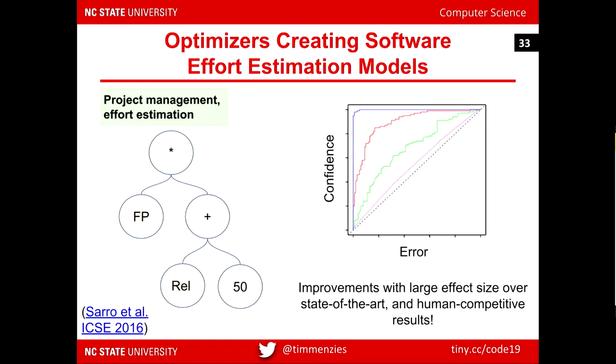Federica Saro at ICSE 2016 talked about multi-objective project management methods, wanting to decrease the error of predictions and the variance of those predictions. She implemented that with a standard optimizer, NSGA2 — the linear regression of optimization. And she found she could do very well in predicting — when she compared against human levels of performance doing effort estimation, she got superior-to-human performance by combining an optimizer with a data miner.